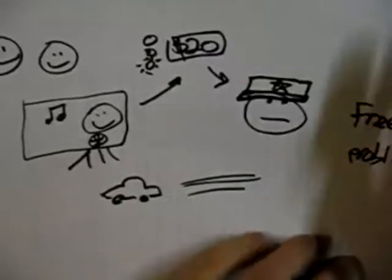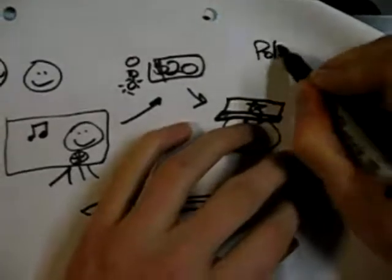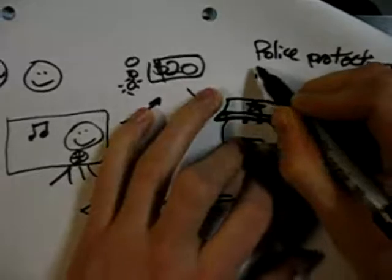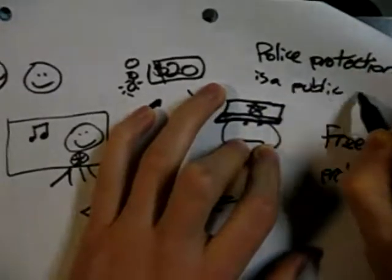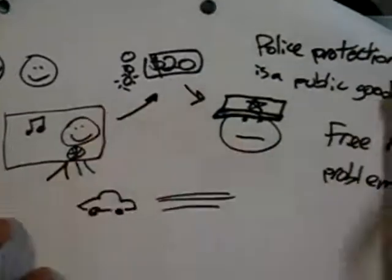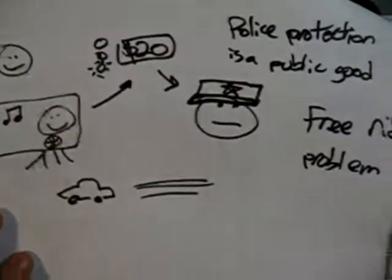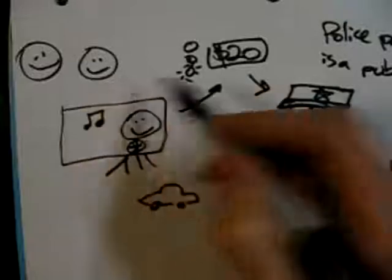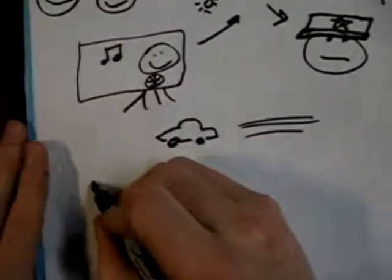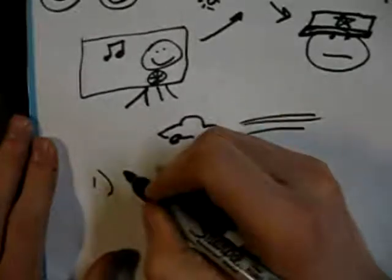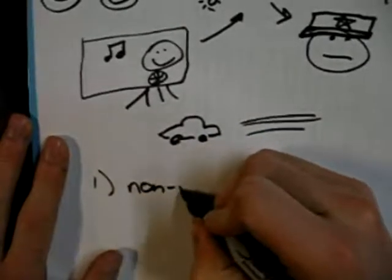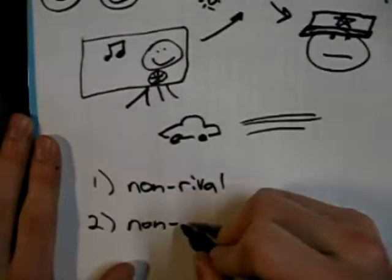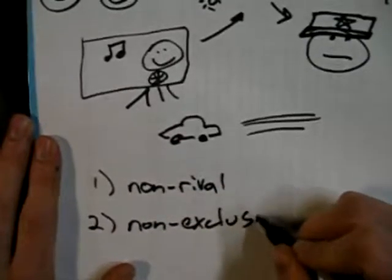So, for example, so I'm going to say that here. Police protection, or police, or maybe law enforcement, is a public good. Or it's an example of a public good. And there's some other examples of public good. So what makes a public good? Well, there's two qualities to a public good. One is that the good or service is non-rival. And the other quality is that the good or service is non-exclusionary.